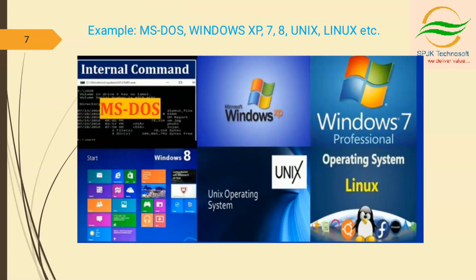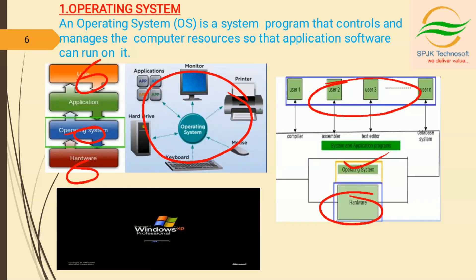Examples of operating systems are: MS-DOS, Windows XP, Windows 7, Windows 8, Unix, and Linux. These are all operating systems. When the computer is switched on, the OS is the first program that gets loaded in its memory.